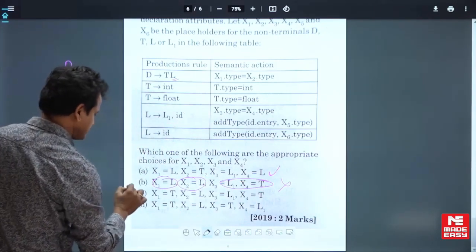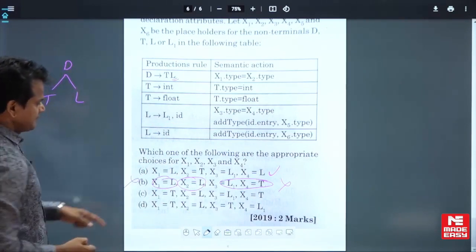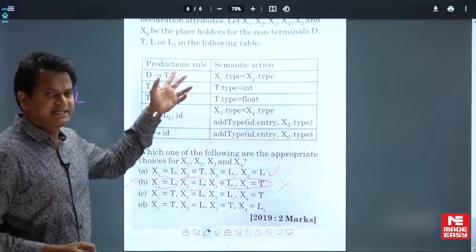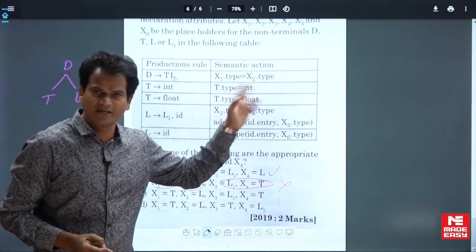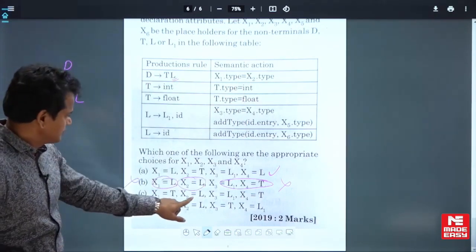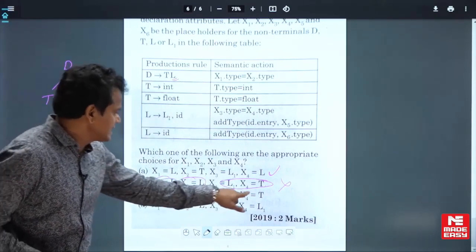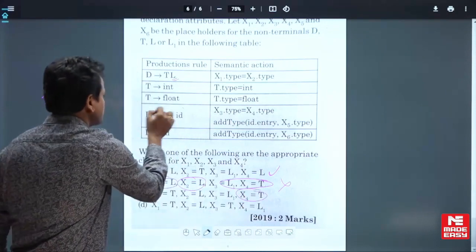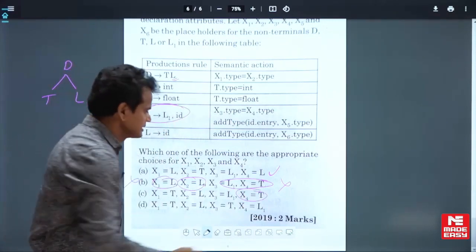Now come to C. x1 equal to T, yes it can be. L.type equal to L, yes. Inherited attribute can be found from any of the children. This can be true. x3 equal to L1, yes. Again x4 equal to T. Again, how did T come? As there is no T in the production, this is also not correct.